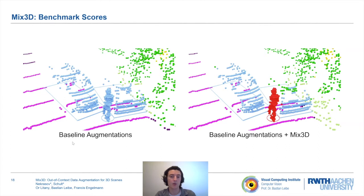Here, we show an example where a pedestrian appears in front of a vehicle. A Minkowski net only trained with baseline augmentation suffers from the strong contextual prior, which accompanies the road. Therefore, it misses to detect the pedestrian. However, a model trained with Mix3D detects the pedestrian as it's robust to the unusual context.